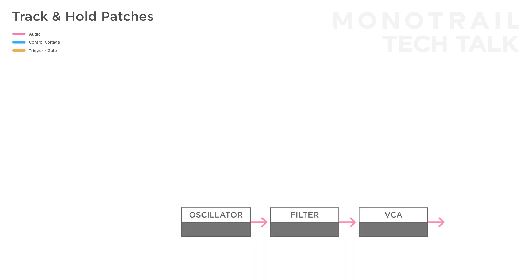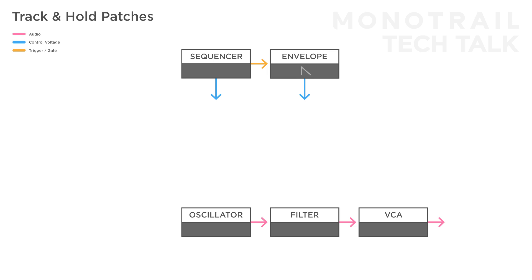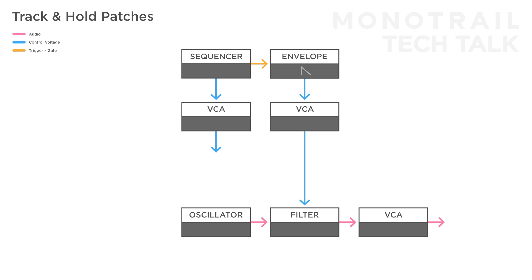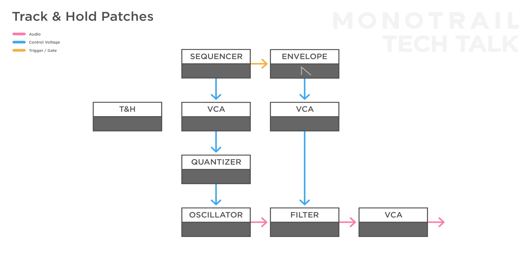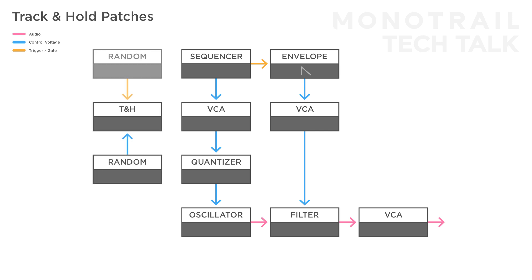Let's set up a simple voice again with a sequencer and envelope. This time send both the melodic sequence and the envelope to a VCA. After the VCA, the sequence melody passes on to a quantizer and then the oscillator, and the envelope passes on to the filter. Then add a track and hold module with two random voltages — one to track, the other to create random gates — and multiply the output to both VCAs. Now when the voltage is low there is no melodic sequence and no envelope, and when the voltage goes higher both the melody and the modulation to the filter will swell up. The quantizer is necessary to re-quantize any one-volt-per-octave signal after it's been altered in some way.